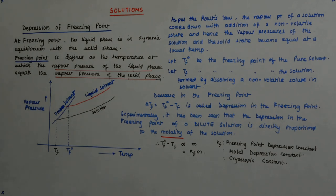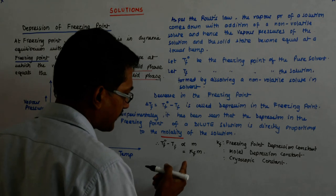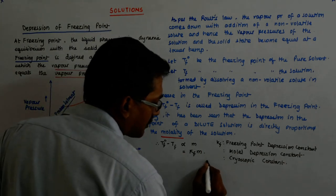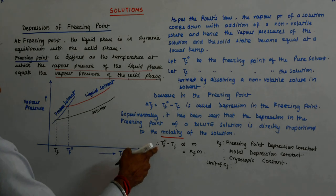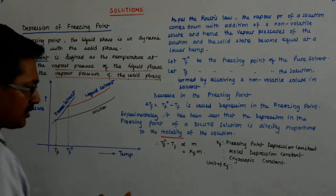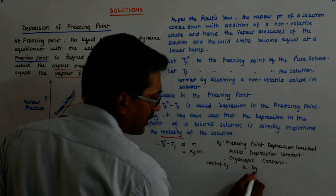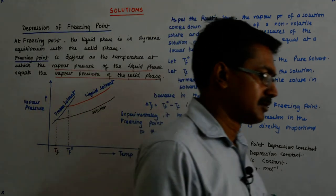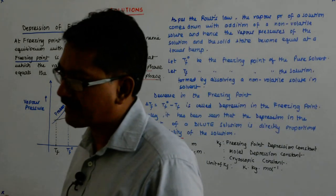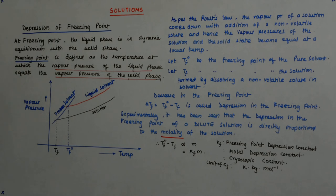So it is equal to Kf·m. Now what is the unit? What is the unit of Kf? Unit of Kf will be what? This is Kelvin and this M is mole per kg. So Kelvin kg per mole. Now if we have W2 amount of solute whose molar mass is M2 and W1 grams of solvent whose molar mass is M1.